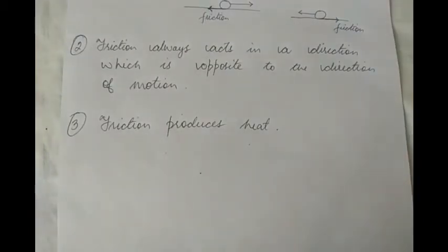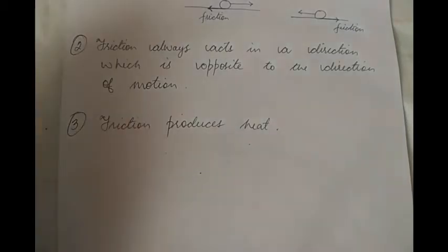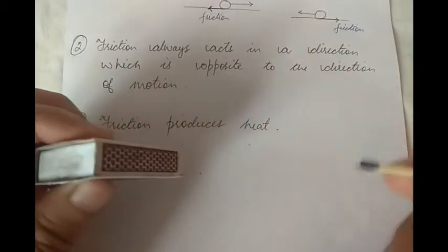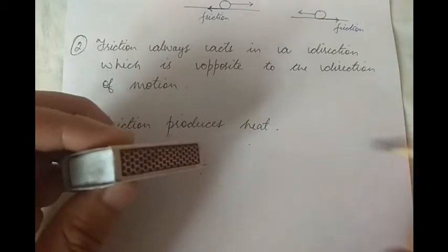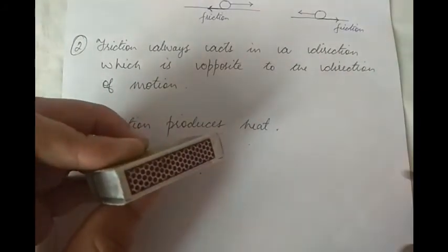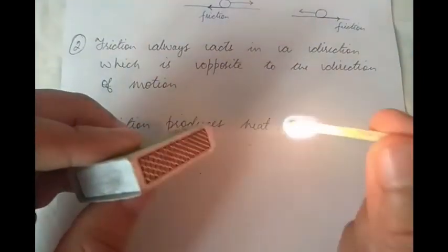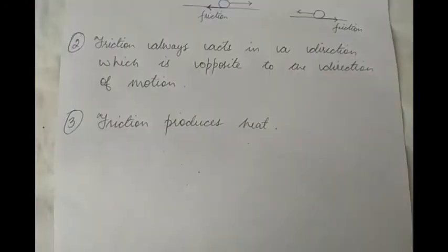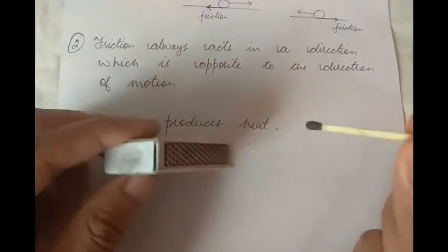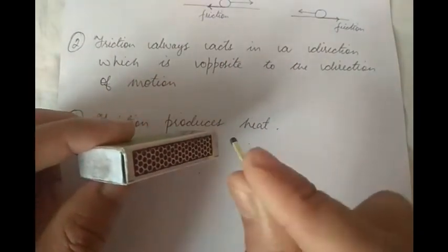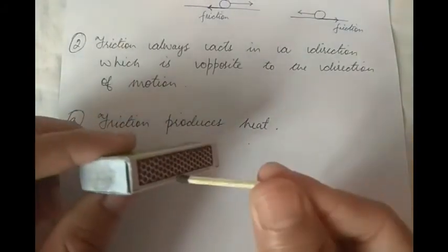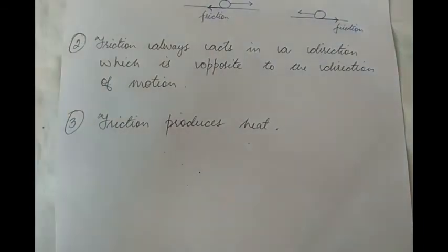Another example of friction producing heat is a matchbox and matchstick. When we rub the matchstick on the rough surface of the matchbox, a fire is lit. This happens because when the matchstick moved over the rough surface of the matchbox, a force of friction came into play between their surfaces, and that friction produced enough heat to light the fire.